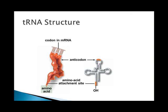Transfer RNA is a specialized form of RNA used to carry a specific amino acid to the ribosome and place it in the proper position. tRNA contains 80 nucleotides in the form of a cloverleaf. The tRNA must attach to the correct amino acid in the cytoplasm and then take it to the ribosome.